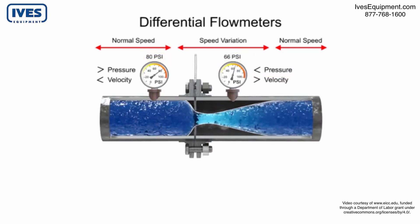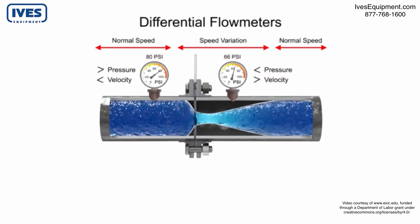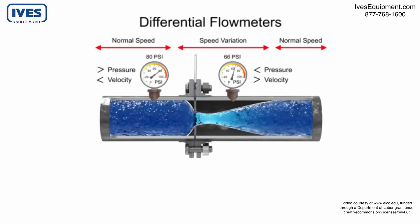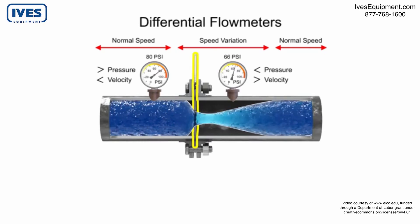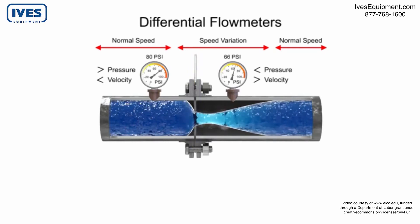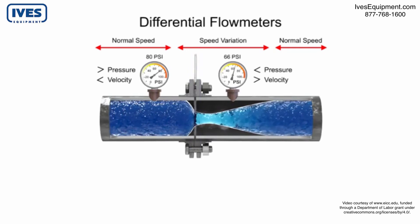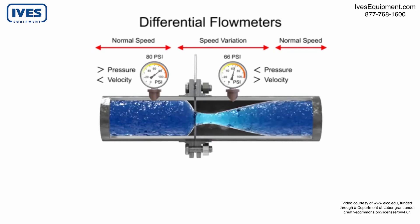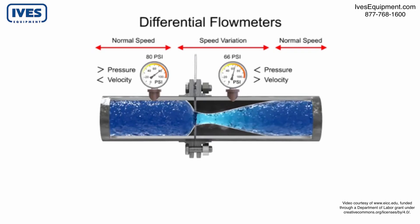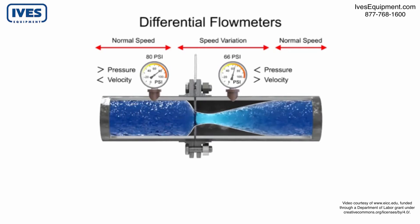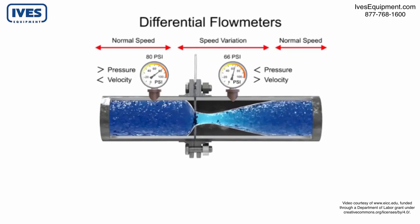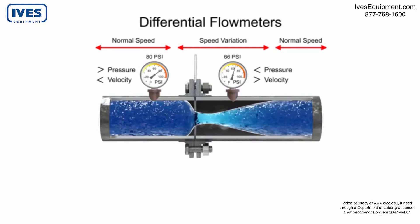As the fluid flow rate increases through the pipe, back pressure on the incoming side increases due to the restriction of flow created by the orifice plate. The pressure of the fluid at the downstream side of the orifice plate is less than the incoming side due to the accelerated flow. With a known differential pressure and velocity of the fluid, the volumetric flow rate can be determined.